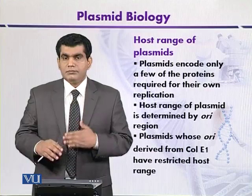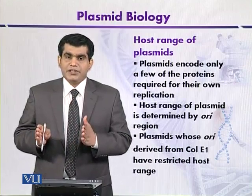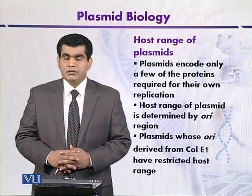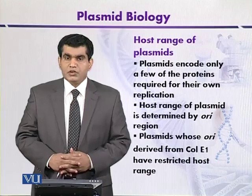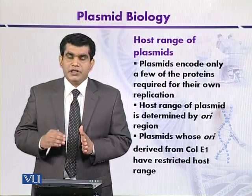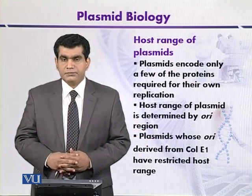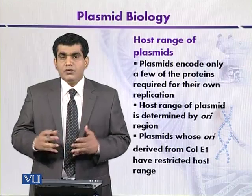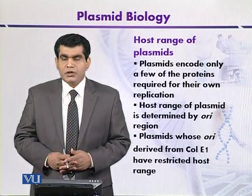The essential genes for DNA replication are present very near to the origin of replication. Other parts of the plasmid not required for DNA replication can be deleted and replaced with foreign DNA or a gene of interest. Therefore, the host range of a plasmid is mainly determined by its origin of replication.